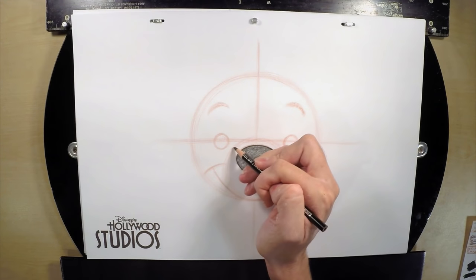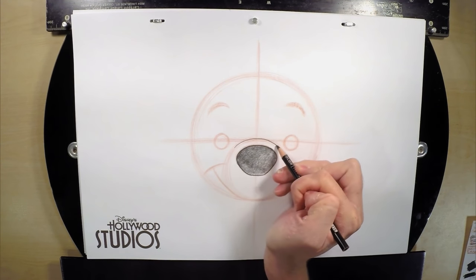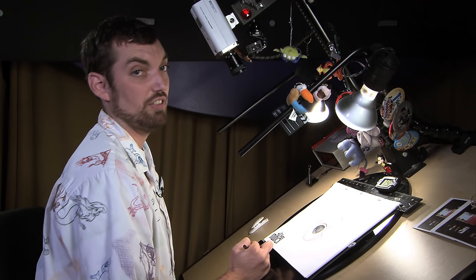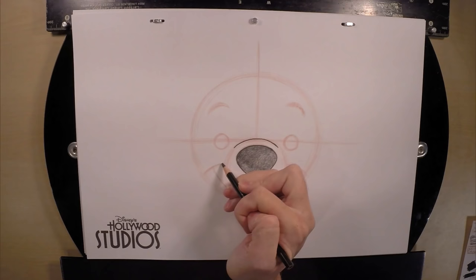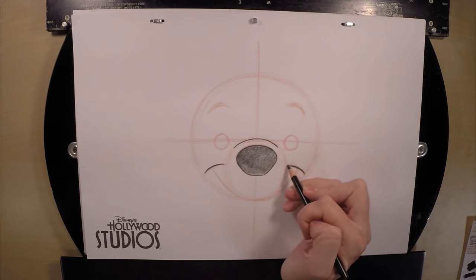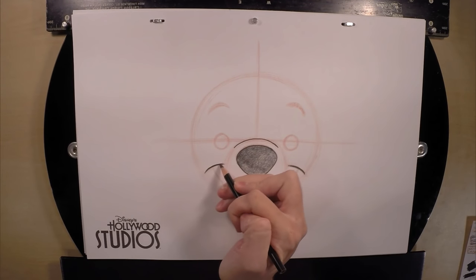And we're going to go ahead and darken the top curve of the oval, from one side of the nose to the other. Once you've got that, you can go ahead and darken the facial features. You want to leave your circle and your guidelines alone. And that oval, don't touch any more of that oval.